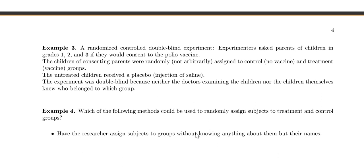For our next example, a randomized controlled double-blind experiment. After the first polio trial, they said we didn't design this very well and went back to do another trial. Experimenters asked parents of children in grades 1, 2, and 3 if they would consent to the polio vaccine. Children of consenting parents were randomly assigned to the control (no vaccine) and treatment groups. The untreated children received a placebo — just a salt and water injection. The experiment was double-blind because neither the doctors examining the children nor the children themselves knew who belonged to which group.